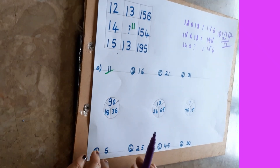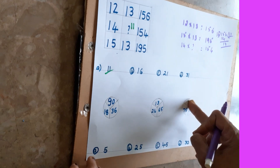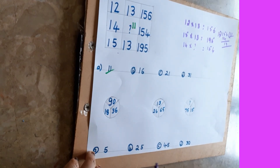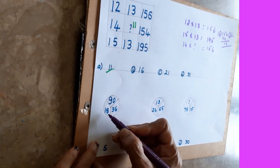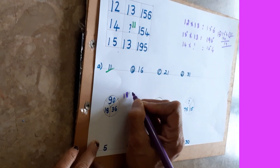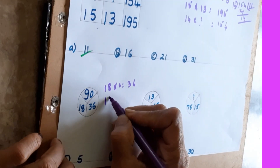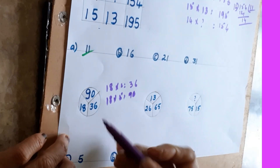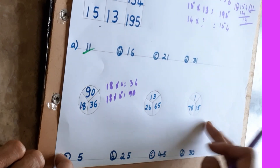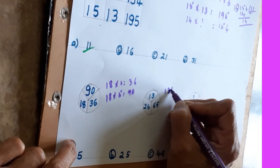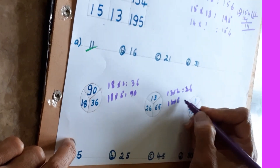See one more reasoning sum. They have given 90, 18, 36 — this one number they don't know. What you have to do: first see what is the smallest number in that. 18 is there. If you multiply: 18 twos are 36, and 18 fives are 90. So they used the 18 times table. Same thing you apply here also: 13 twos are 26, 13 fives are 65.